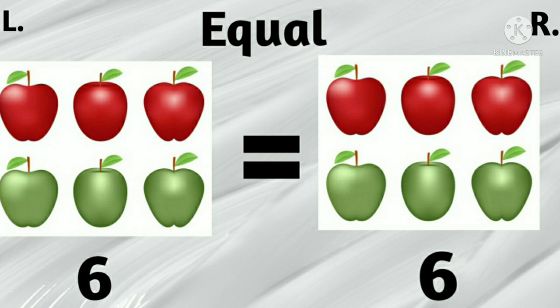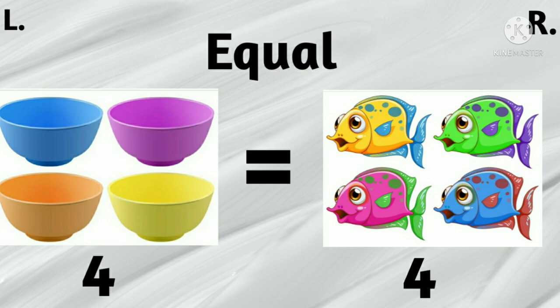In this one, the left side has 4 balls and the right side has 4 fishes. The object is different, but their numbers are the same. So we can say they are equal in numbers.